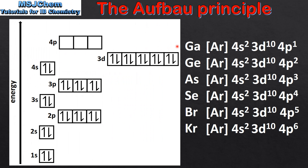Finally we'll look at the electron configurations of gallium to krypton. In these elements we are now filling the 4p sublevel. Starting with gallium which is 4p1, next germanium which is 4p2, moving on to arsenic which is 4p3, then selenium, next is bromine, and finally krypton. So there you have the electron configurations of the first 36 elements in the periodic table.